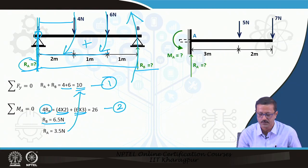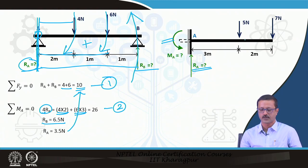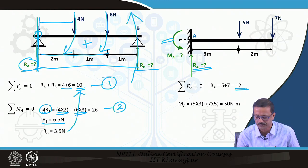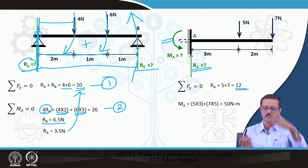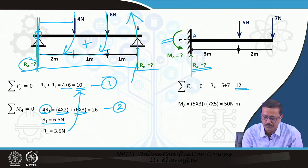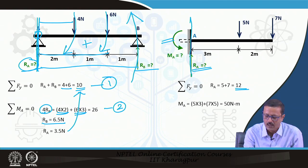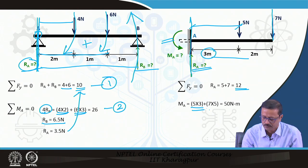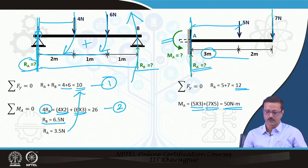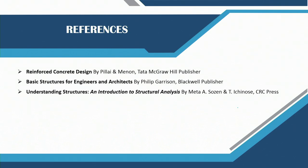For a cantilever beam with loads of 5 N and 7 N, sigma Fy = 0 gives R_A = 5 + 7 = 12 N. Taking sigma M = 0 at A: since R_A passes through A, M_A = 5×3 + 7×5 = 15 + 35 = 50 N·m. Both the reaction and fixed-end moment are determined.